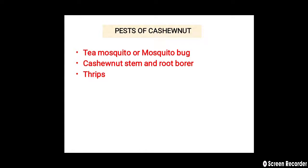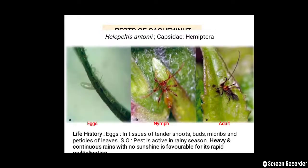Let us see the pests of cashew nuts. The first one is tea mosquito or mosquito bug, the second one is cashew nut stem and root borer, and the third one is thrips. Let us see them one by one.